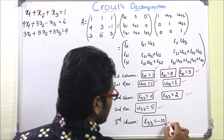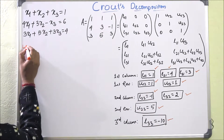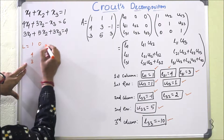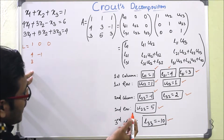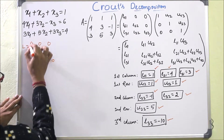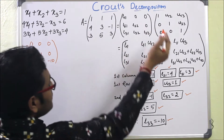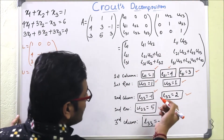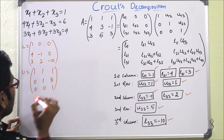Similarly, L33 = −10. We can now write the full matrices. L = [[1, 0, 0], [4, −1, 0], [3, 2, −10]] and U = [[1, 1, 1], [0, 1, 5], [0, 0, 1]]. The diagonal entries of U are all 1, as required by Crout's method.